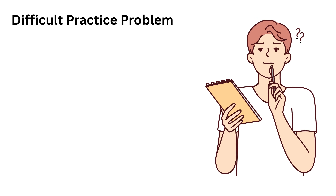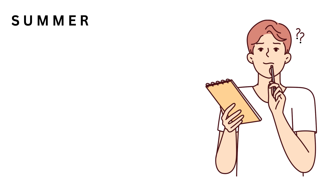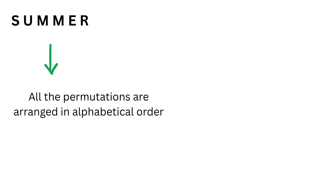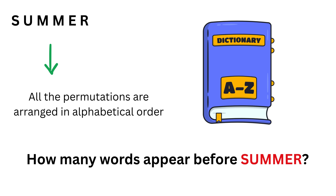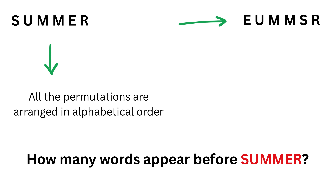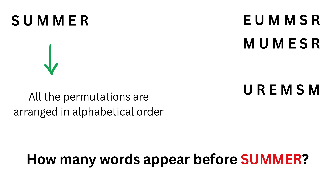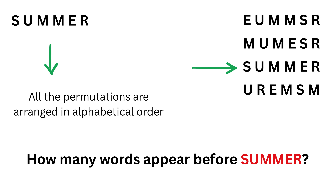Now let us solve a somewhat difficult problem. The letters of the word SUMMER are permuted and all permutations are arranged in alphabetical order, like in a dictionary. We want to find how many words appear before SUMMER. For example, when various permutations are arranged alphabetically, SUMMER will appear at a specific position, and we need to count all words that come before it.